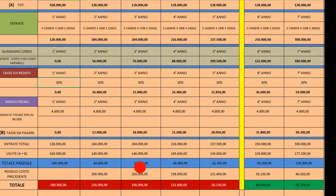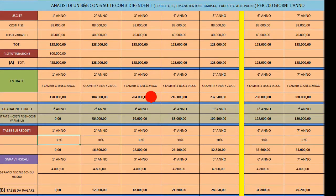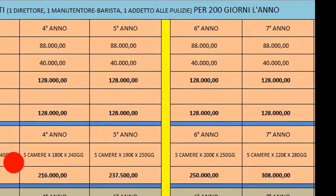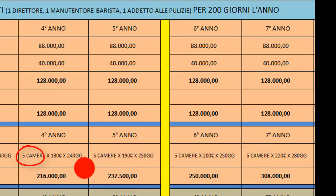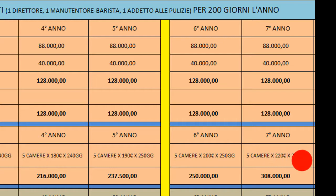Al terzo anno aumento anche il prezzo: la tariffa a notte sale a 170 euro, per 240 giorni. Per tutti e 7 gli anni ho mantenuto un'occupazione di 5 camere, ragionando per difetto. Non sono mai arrivato a 365 giorni: il massimo che ho previsto sono 280 giorni.